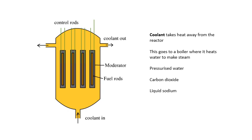First, the coolant. The coolant takes heat away from the reactor — the fission reaction produces heat and the coolant carries it to a heat exchanger, where it boils water to make steam. The steam then goes through turbines to generate electricity.